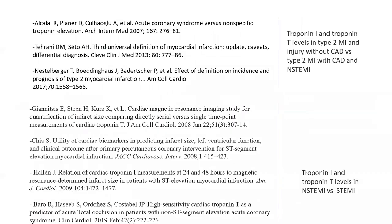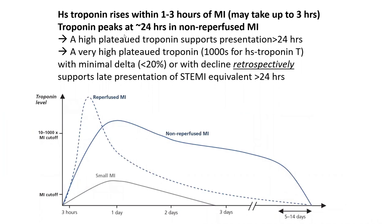How long does it take for high-sensitivity troponin to rise, and how long to peak? It takes 1 to 3 hours to rise after MI. If it is less than MI cutoff by three hours, you have already ruled out myocardial injury. However, it takes 24 to 36 hours for troponin to peak in non-reperfused MI. If you've done PCI early, as in STEMI, it peaks usually at about 16 to 18 hours — earlier and sometimes higher peak, but a narrower peak and smaller area under the curve of myocardial mass injured.